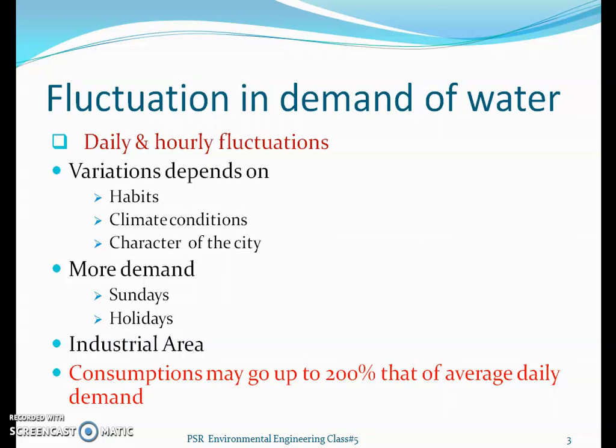Daily and hourly fluctuations majorly depend upon habits, climatical conditions, and the character of the city. If people are habituated to a cool environment below 35 degrees, they use more cooling and bathe two to three times. Climatical conditions — if it is too hot, more water is used. Character of the city also matters: if it is residential, water demand and its variation are minimum; if industrial and residential combined, there is more variation.